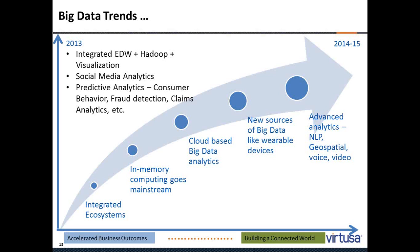In the future, we will see more integrated ecosystems. We will see in-memory computing go mainstream, which means compiling reports will become much easier — users will be able to develop reports based on their needs without going through big repositories. We will have big data analytics on cloud, making it more accessible and easier. We will have new sources of big data, including a lot of machine data, and especially with the growth of the internet of things, a lot of sensor data. From an analytics perspective, we can expect advanced analytics, natural language processing, geospatial analysis, and integrating voice and video data into regular structured data formats.